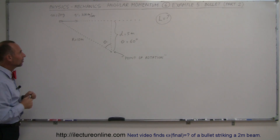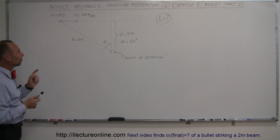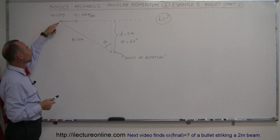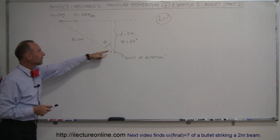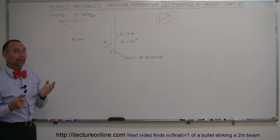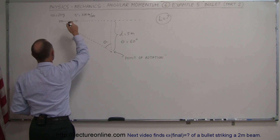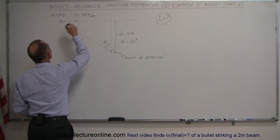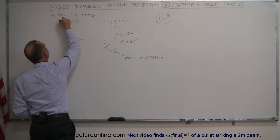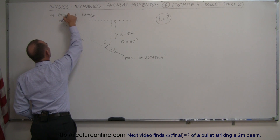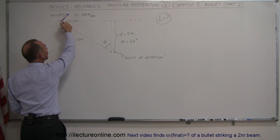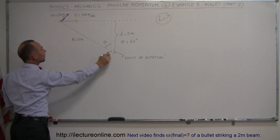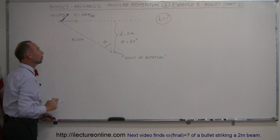The best way to look at it is to find the component of the velocity that is perpendicular to the line connecting the point of rotation and the bullet. So that would be this velocity right here — the perpendicular component of its actual velocity, perpendicular to the line from the point of rotation to the bullet.